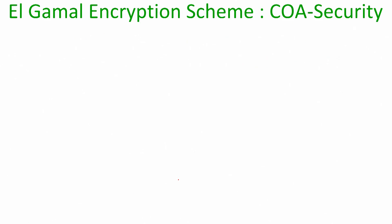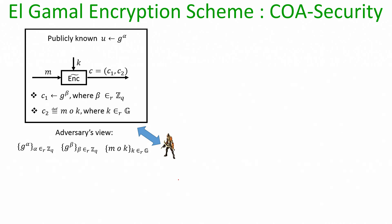Now let us turn to the CPA security of the actual ElGamal encryption scheme in the public key setting. Recall the symmetric key variant: the adversary's view consists of G^α (alpha random from Z_Q), G^β (beta random from Z_Q), and C2 = M · K where K is a uniformly random group element — and we proved this is perfectly secure. In the actual ElGamal public key encryption scheme, the ciphertext second component is C2 = M · G^{αβ}, the Diffie-Hellman key.